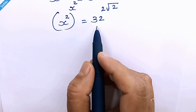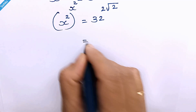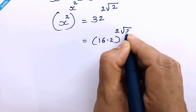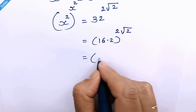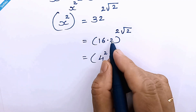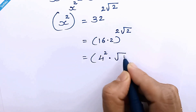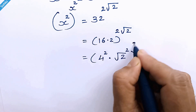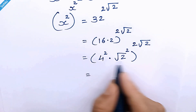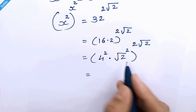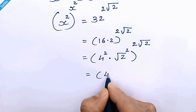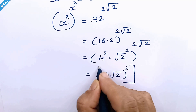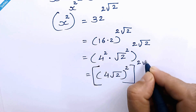Now let's focus on the right hand side. 32 can be written as 16 times 2, whole raised to 2 times square root of 2. Since 16 is 4 squared, and 2 is square root of 2 squared, we can combine them — giving 4 times square root of 2, whole squared, raised to 2 times square root of 2.